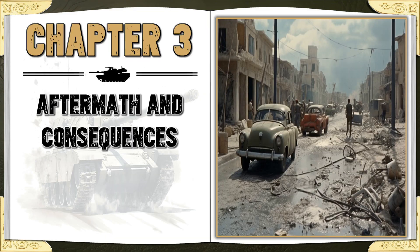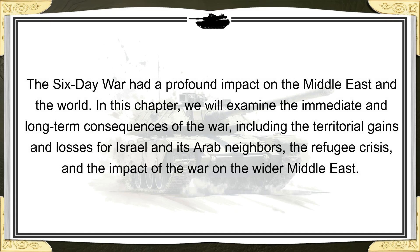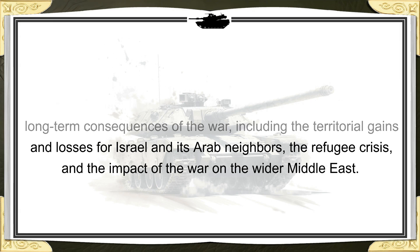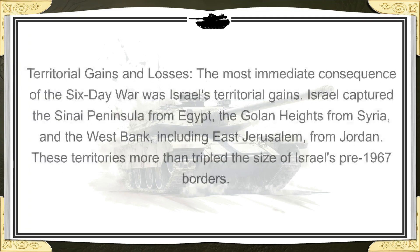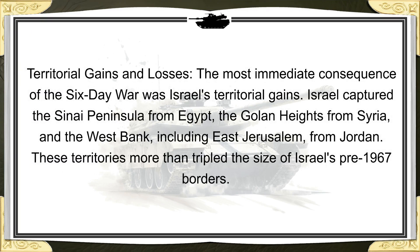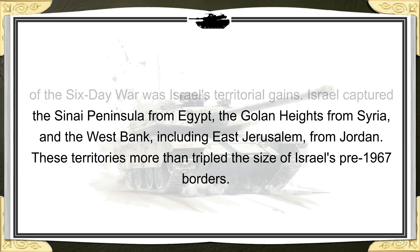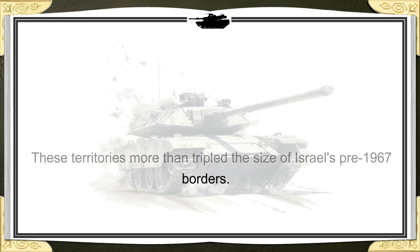Chapter 3: Aftermath and Consequences. The Six-Day War had a profound impact on the Middle East and the world. The most immediate consequence was Israel's territorial gains: Israel captured the Sinai Peninsula from Egypt, the Golan Heights from Syria, and the West Bank, including East Jerusalem, from Jordan. These territories more than tripled the size of Israel's pre-1967 borders.